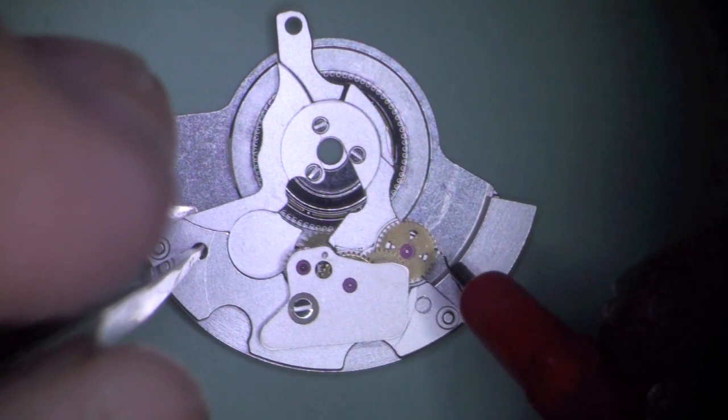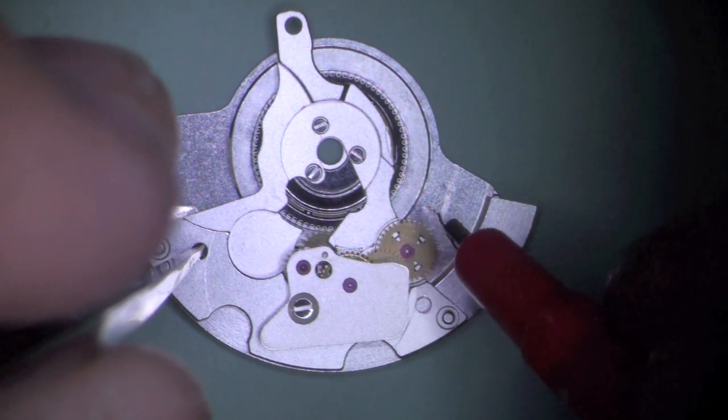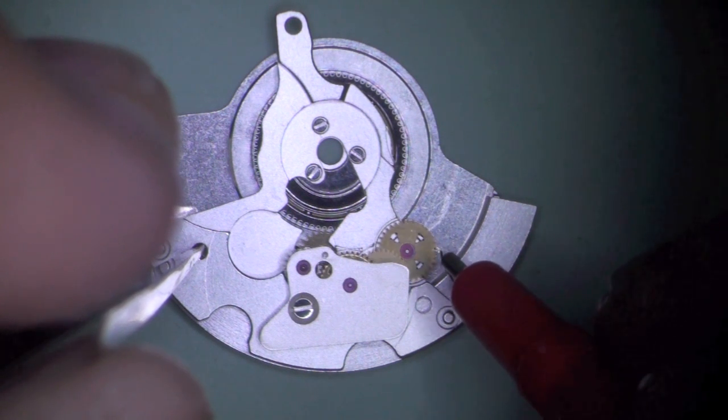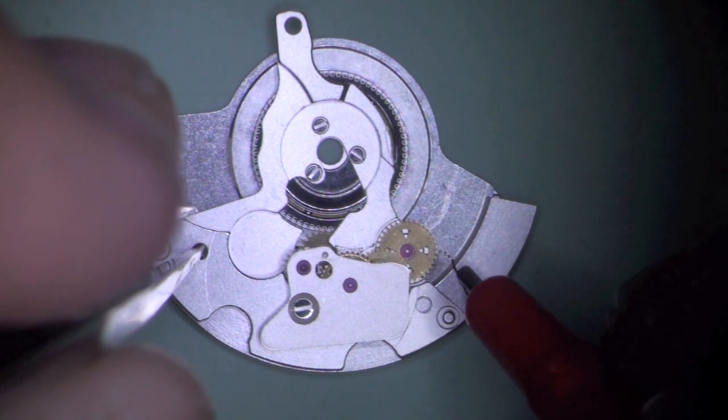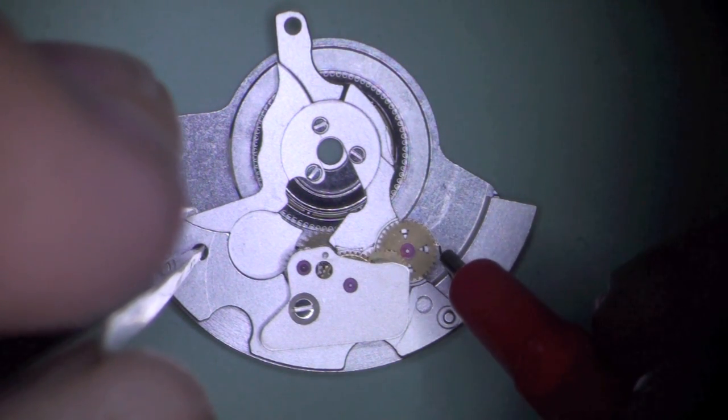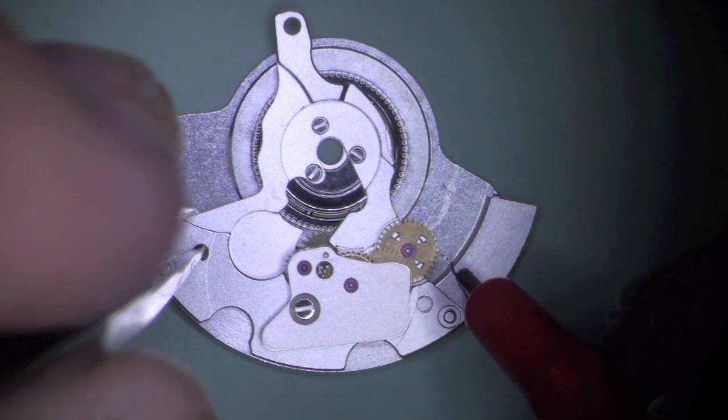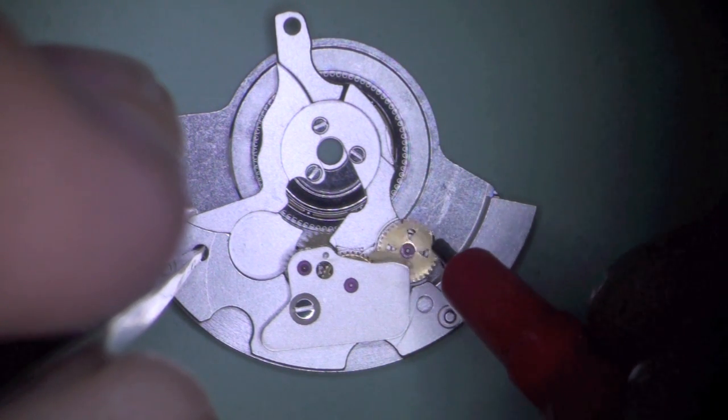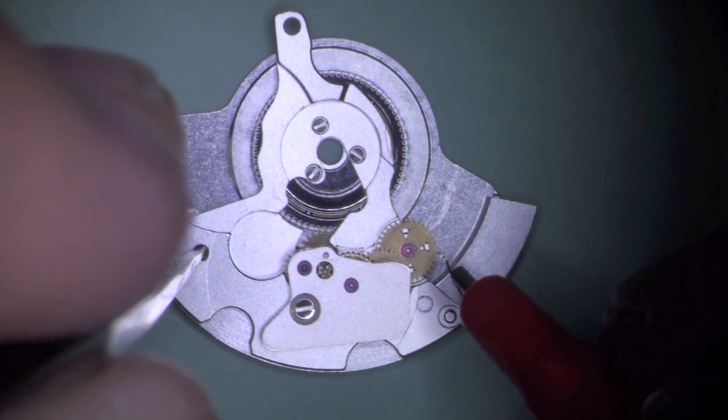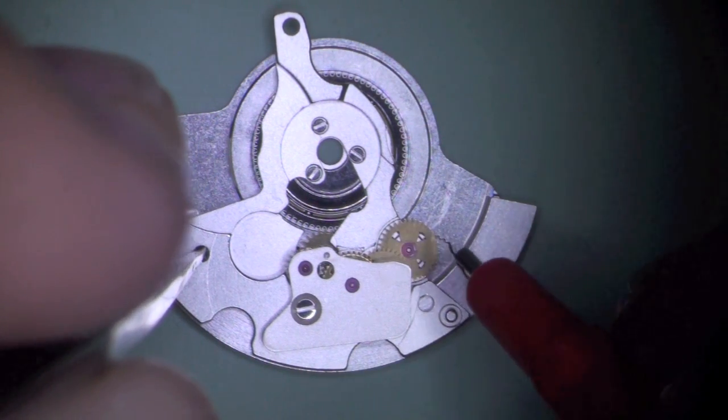Although this caliber only contains one reverser, the operating principle is the same. When applying pressure to the ratchet driving wheel in the winding direction, the reverser slips without significant resistance. Note that the brass bristle does not deflect.